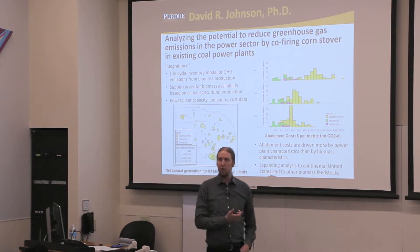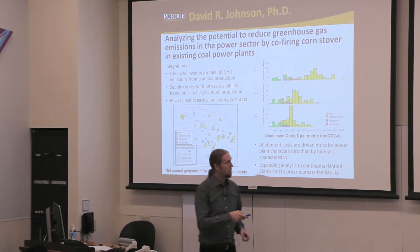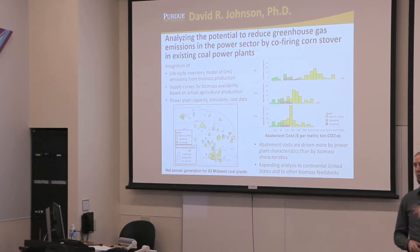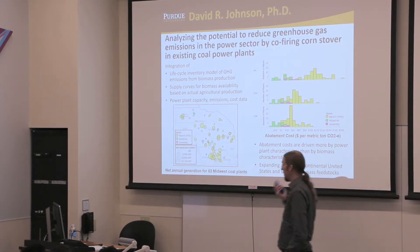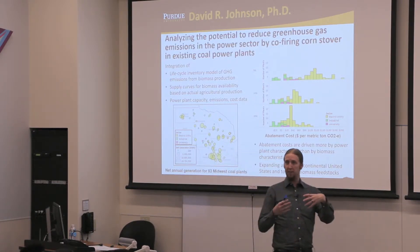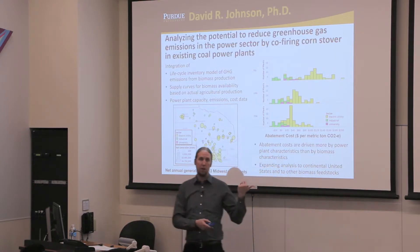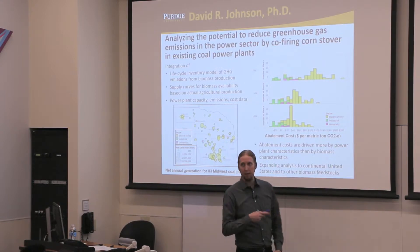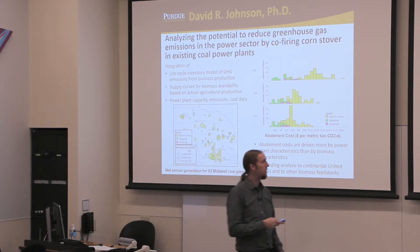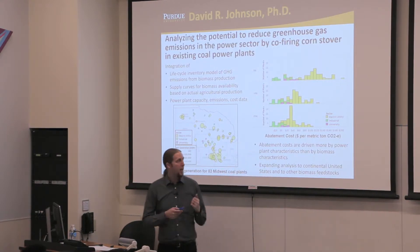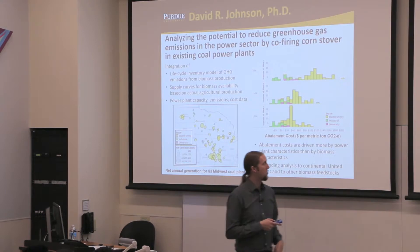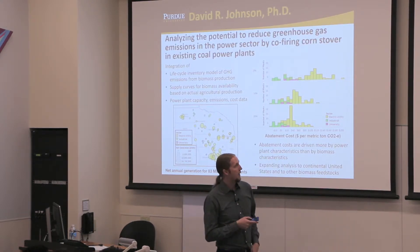Over the long term we probably want to move away from coal entirely, but in the short term we have existing plants not necessarily close to their end of life. This would be a way to reduce the emissions intensity of existing power plants while they're still in operation. One of my students was looking at the implied abatement cost of this strategy — how many dollars it costs to reduce emissions by one ton of CO2 by using corn stover instead of coal. We analyzed 83 different coal power plants in the Midwest.